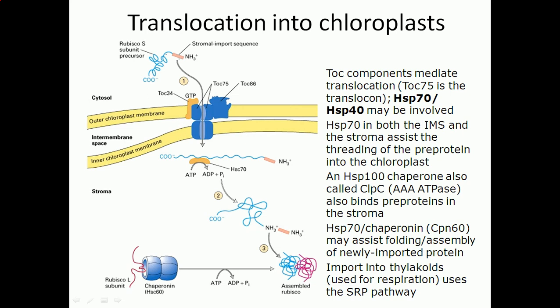That's called the stromatal import sequence, as you can see here. The stromatal import sequence, or SIS, should be at the N-terminal end.